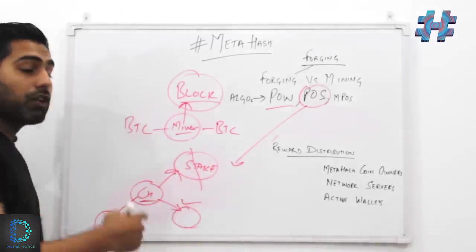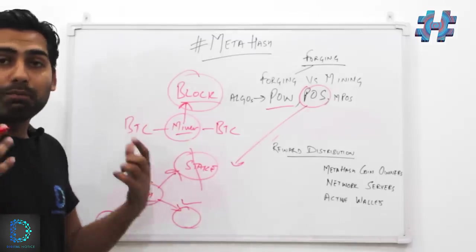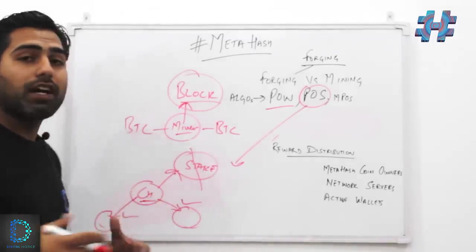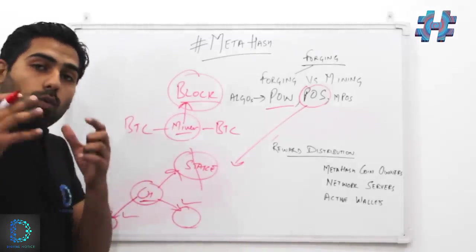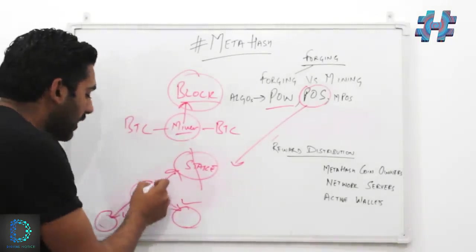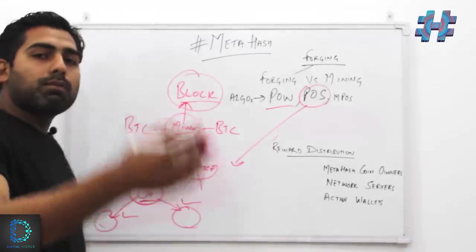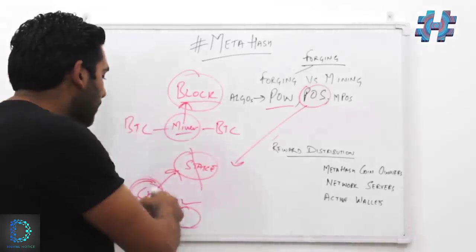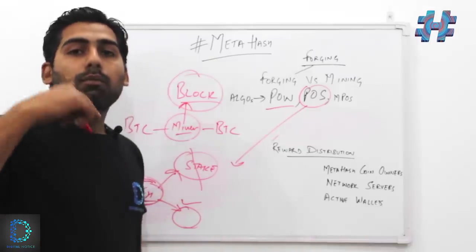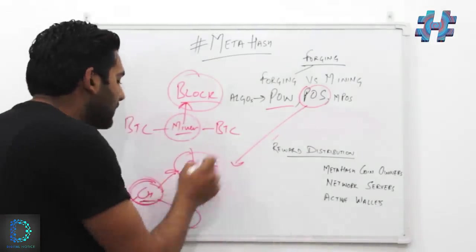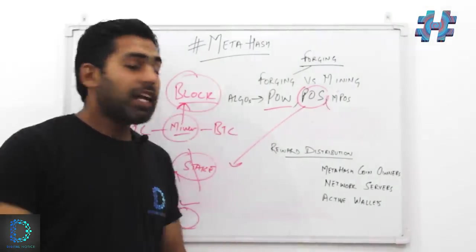That was kind of a punishment, an algorithm that was built so that only valid transactions need to be verified. Once the transaction is verified, this is how the block generation was done. Once the block was generated, the coins were rewarded to these stakeholders.